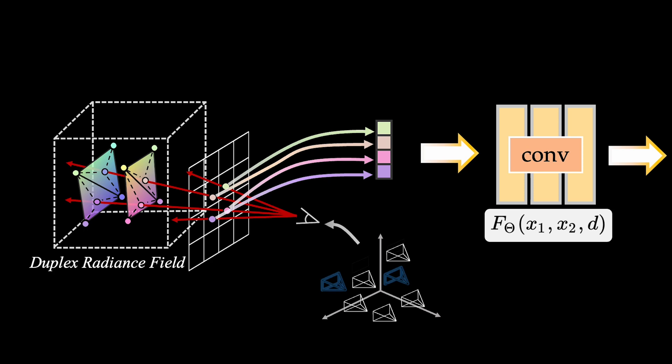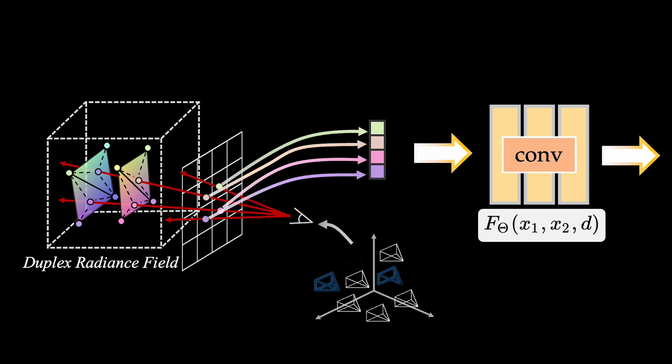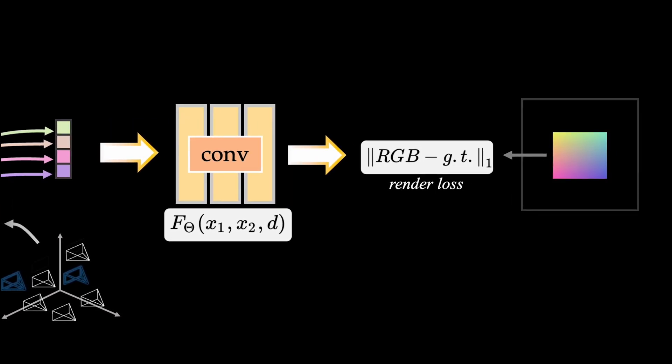We use the L1 loss function calculated between the rendered pixels and the target RGB colors to optimize the whole framework. Next, we show some video comparisons.